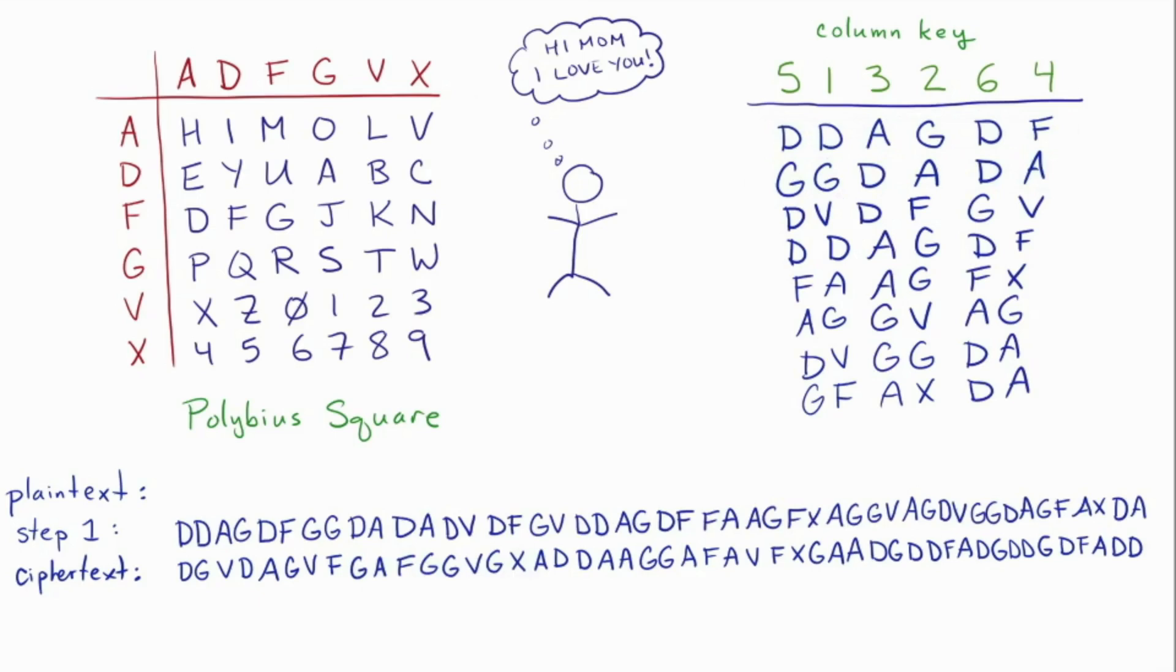So now we've undone the second of the two steps. Now we can use the Polybius square to pull out the actual plaintext. So for example, the DD, look up those coordinates in the table and you see Y and that's the first plaintext letter. Then you look up AG and you see an O and that's the second plaintext letter, and so on and so forth. That's how you encrypt and decrypt with the ADFGVX cipher.